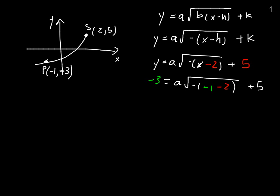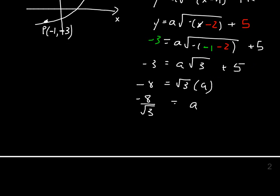This gives me minus 3 equals a times, in the brackets times the negative gives me positive 3, so times the square root of positive 3 plus 5. Now I bring 5 to the other side, it becomes minus 8 equals √3 times a. Divide both sides by root 3 and I get a equals negative 8 over root 3. Now let's rationalize the denominator. We multiply top and bottom by the square root of 3 and I get minus 8√3 over 3 equals a. And 8 and 3 don't reduce, so I'm done.